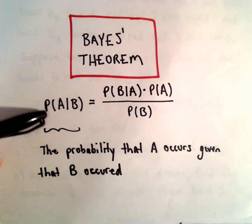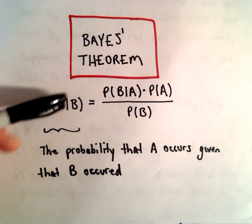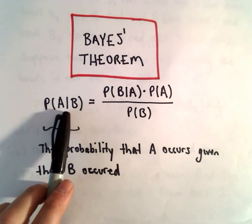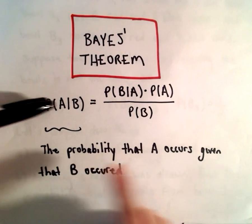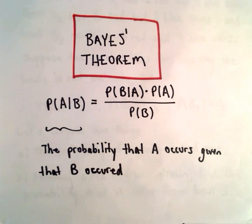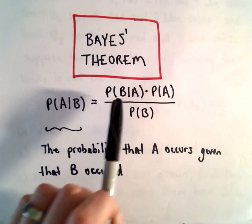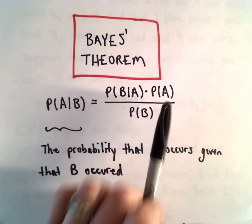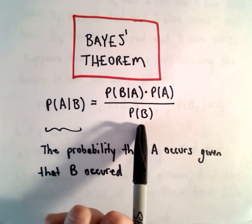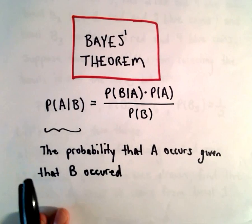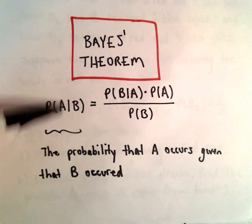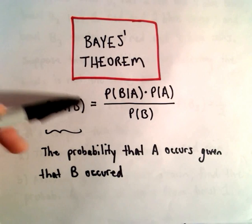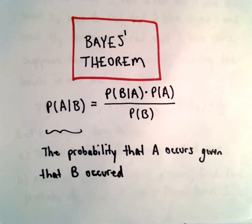What Bayes' theorem says is we're going to calculate the probability that some event A occurs given that event B occurs. You can read the vertical bar as the word 'given.' To calculate this, we take the probability that B occurred given that A occurs, times the probability that A occurred, divided by the probability that B occurred. This is one of the fundamental ideas: we're trying to find the probability of some event given extra information — that some other event B occurred.